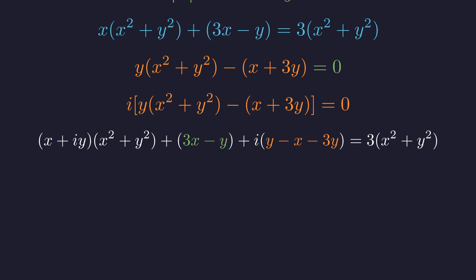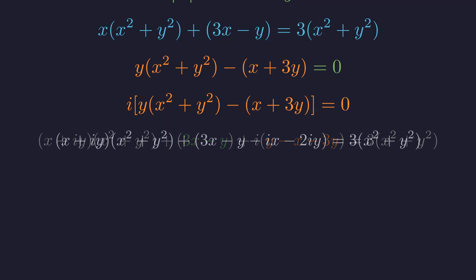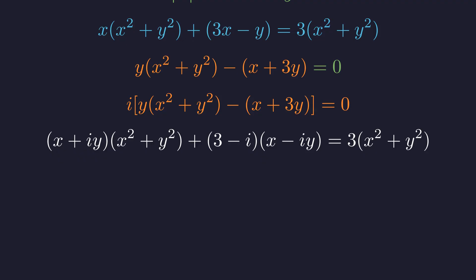Let's simplify the remaining terms: 3x minus y plus i times negative x minus 3y. This factors as the quantity 3 minus i times the quantity x minus iy.